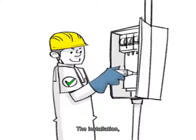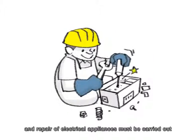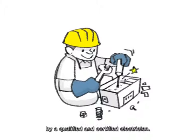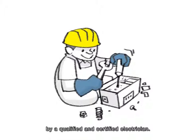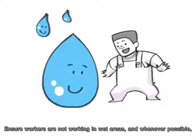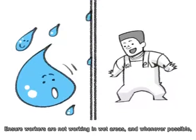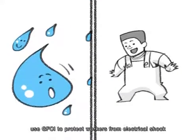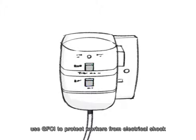The installation, wiring and repair of electrical appliances must be carried out by a qualified and certified electrician. Ensure workers are not working in wet areas. And whenever possible, use GFCI to protect workers from electrical shock if there are unavoidable wet areas with electrical equipment.